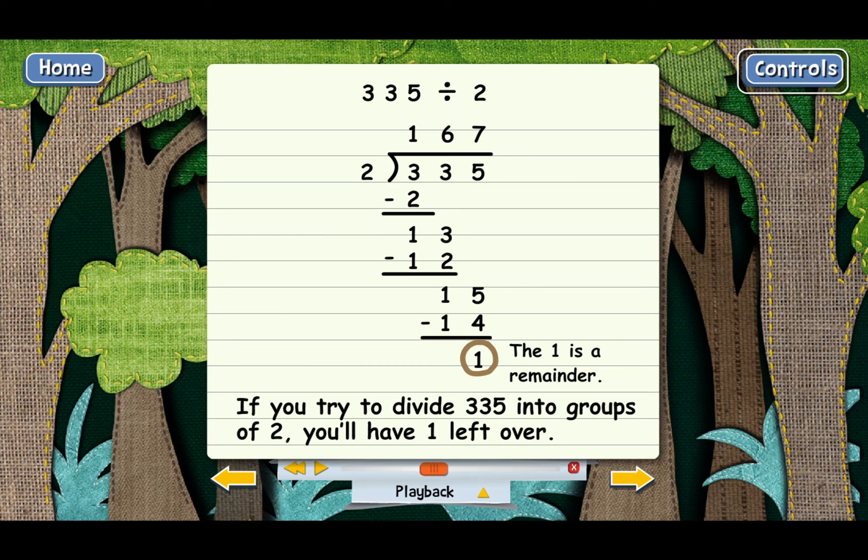You'll have 167 groups of two with an extra one that doesn't fit. The way you write a remainder in a division problem is to just put it next to the answer. That little r just means remainder. You can get all sorts of remainders when you're dividing. It doesn't always have to be a remainder of one. It can be a remainder of two or three or four and on up.